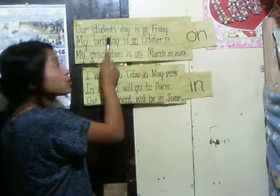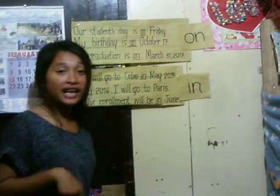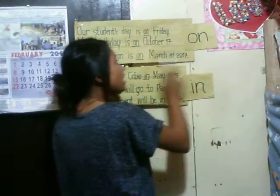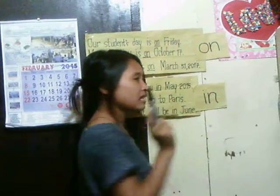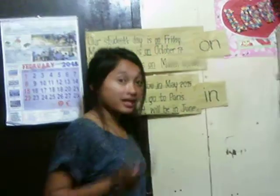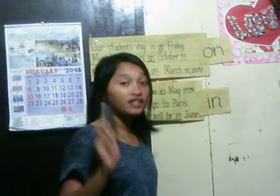We can use on correctly in three forms. First, when we specify the name of the week. For example, our Students' Day is on Friday. Friday is the name of the week, and on is the right form to use. Second, when we specify the month and the day. For example, my birthday is on October 17th. October is the month and 17th is the day, and on is the right form to use.